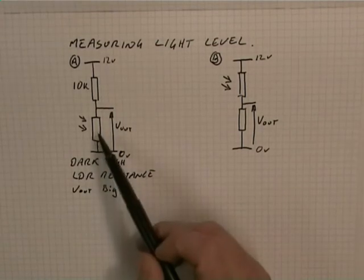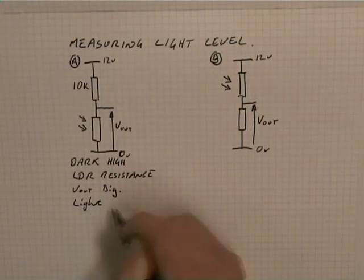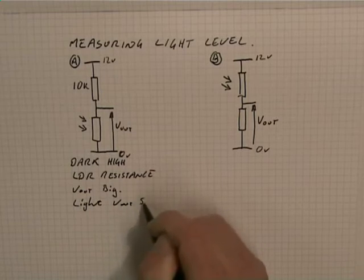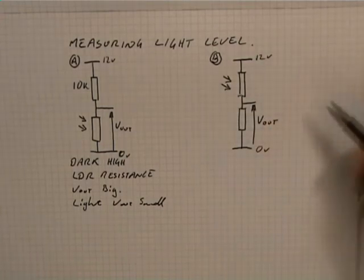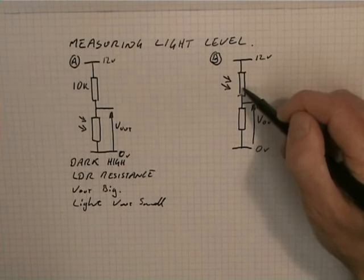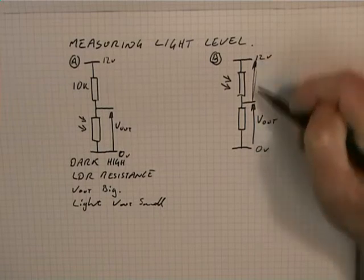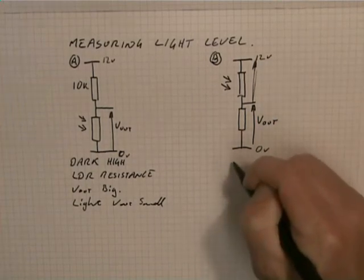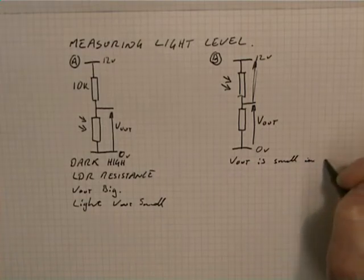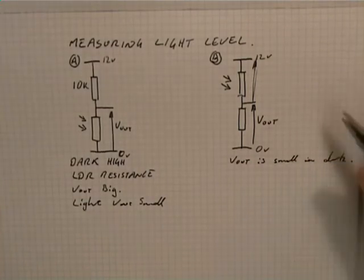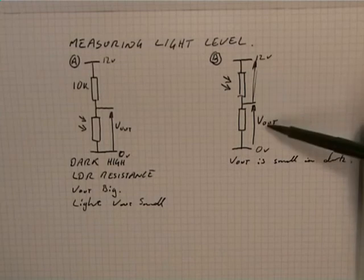As it gets lighter, this resistance decreases. So in the light, Vout will be small for this one. In this circuit here, in the dark, that's got a big resistance, so the voltage here will be big in the dark, which means Vout is small. In this one, Vout is small in the dark. And in the light, that resistance goes small, so there will be less voltage across here, and Vout will be big.